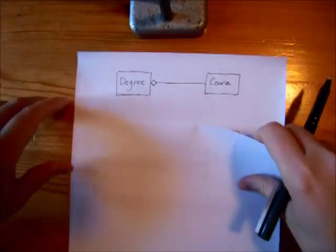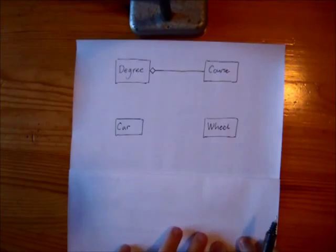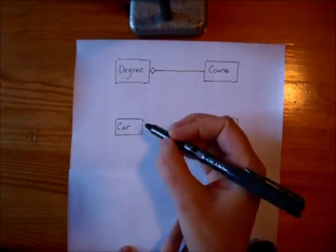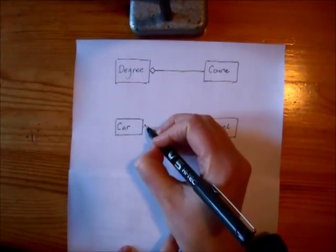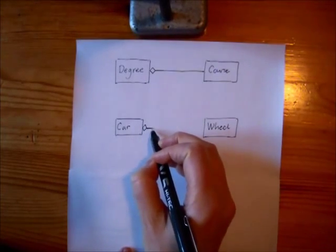Composition is a stronger relationship, and I'm going to use here the example of the relationship between a car and its wheels. Now, clearly, an aggregation is correct. A car contains its wheels.